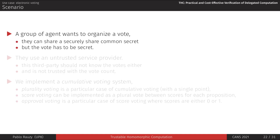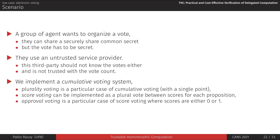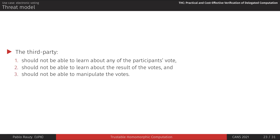Our scenario is that a group of agents who share a common secret wants to organize a vote. Since the vote has to be secret, they decide to use a third party to organize the vote — but this third party is not trusted. We chose to implement a cumulative voting system in which each agent has a certain number of points they can freely distribute among the propositions, as it is the most general of commonly used voting systems. Our threat model consists of three conditions: the third party should not be able to know any participant's vote, it should not be able to know the result of the vote, and it should not be able to manipulate the vote.